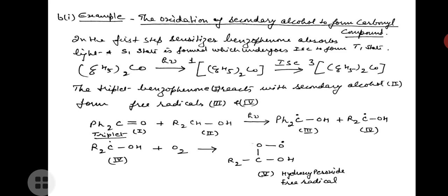The triplet excited state of benzophenone reacts with secondary alcohol to form free radicals — radical 3 and radical 4. The triplet benzophenone reacts with secondary alcohol in the presence of light, and free radicals 3 and 4 are formed. The fourth free radical — the hydroxy carbon radical — reacts with ground state O2 and forms a hydroxy peroxide free radical.